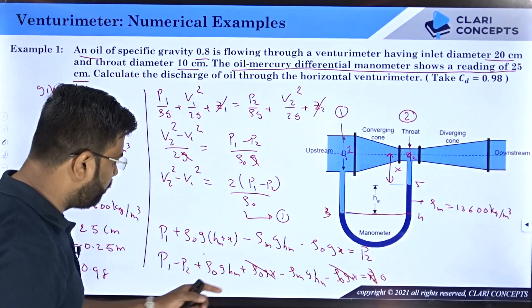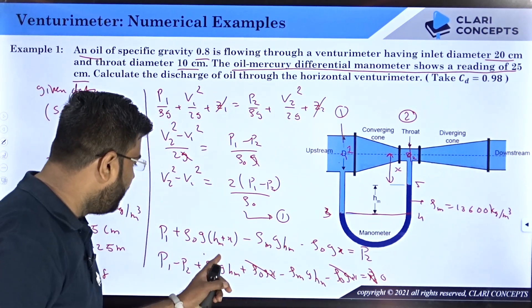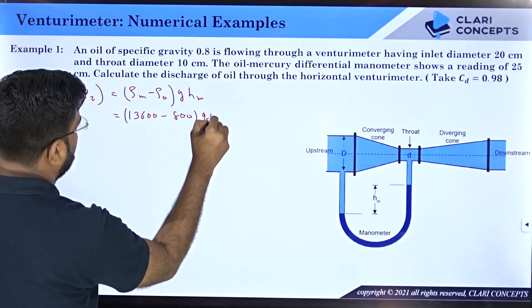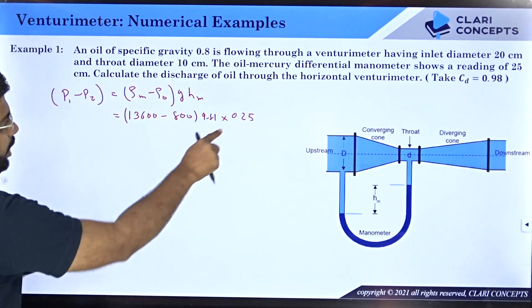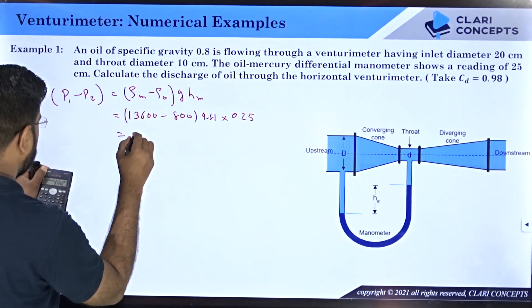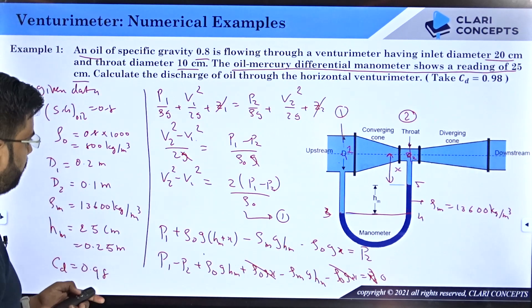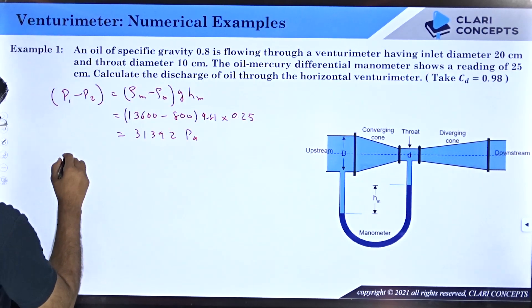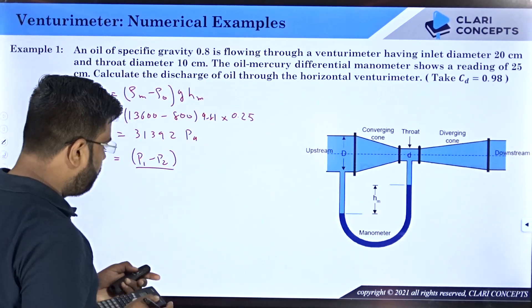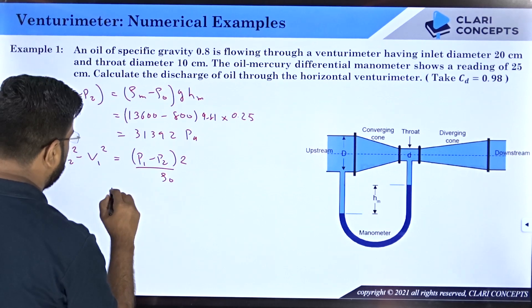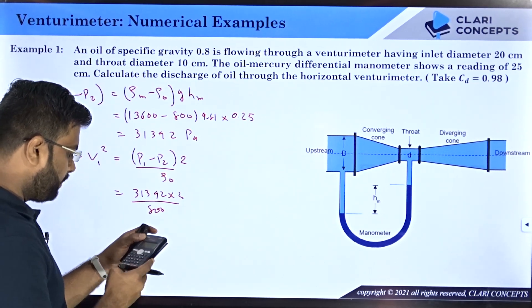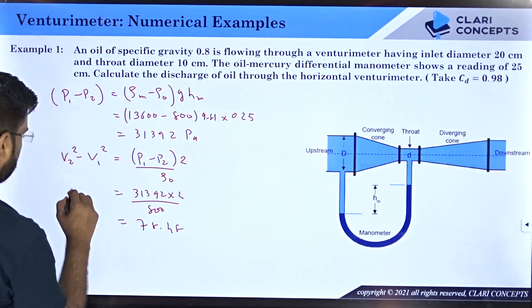Substituting values: p1 − p2 = (13600 − 800) × 9.81 × 0.25 = 31392 Pascal. Now substituting into equation one: v2² − v1² = 31392 × 2 / 800 = 78.48 m²/s².